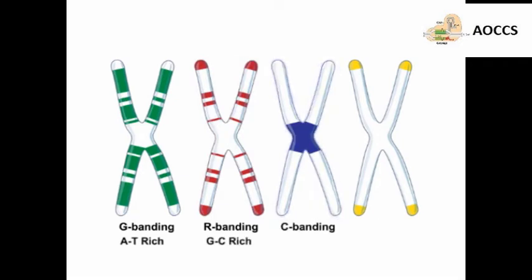C-banding highlights the densest chromosomal regions around the centromere, the structure which joins the identical halves of a duplicated chromosome, whereas T-banding highlights the ends of chromosomes, or telomeres.